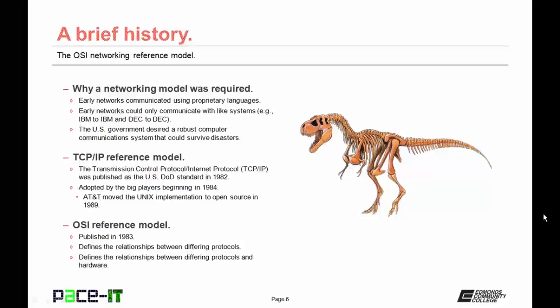Early networks communicated using proprietary languages. Because of those proprietary languages, early networks could only communicate with like systems — so an IBM network could only communicate with another IBM network. In addition to that, the US government desired a robust computer communication system that could survive disaster.